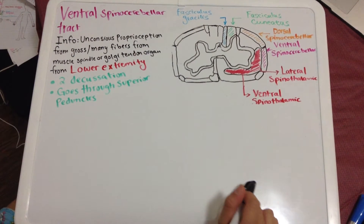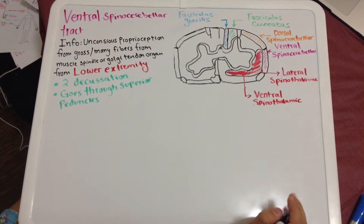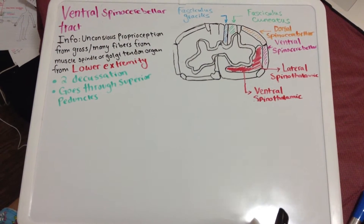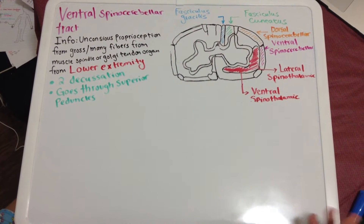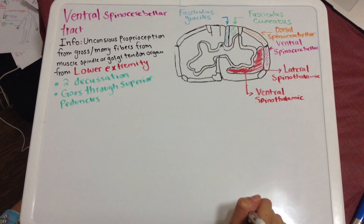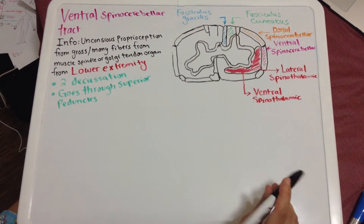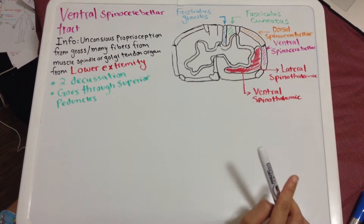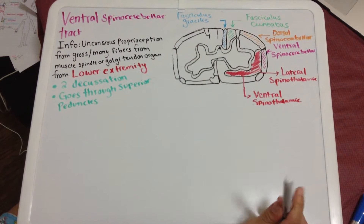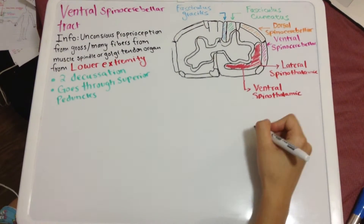The ventral spinocerebellar tract carries unconscious proprioception from many fibers — muscle spindles and Golgi tendon organs — from the lower extremity. The main difference of this tract compared to the other three unconscious proprioception tracts is that it has two decussations, travels through the superior peduncles, and takes information from many fibers, unlike the rostral spinocerebellar tract.